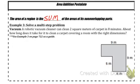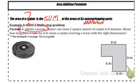Now let's specifically look at example number 3, solving a multi-step problem. A vacuum, a robotic vacuum cleaner—wait, what's a robotic vacuum cleaner? It's a Roomba. A robotic vacuum cleaner can clean 2 square meters of carpet in 8 minutes. About how long does it take for it to clean carpet covering a room with the right dimensions?